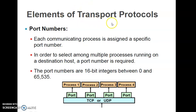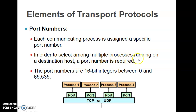The next element is port numbers. The port address is a port number, which is 16 bits. Each communication process is assigned a specific port number. To select among multiple processes running on the destination node, a port number is required. Since multiple application processes may be running, each process has its own different port number. The range of port numbers is from 0 to 65535.